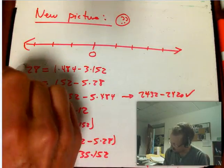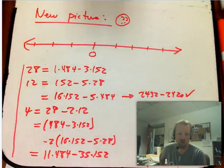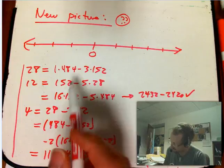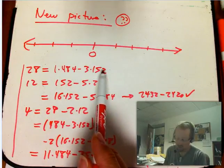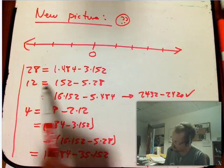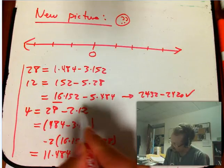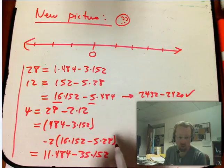But let's just be really specific. I didn't want to bore you with doing it out live, but here's the process that we were getting to. The 28 is a linear combination of A and B, 484 and 152. 12 can be written as a linear combination as well. It turns out to be 16 times 152 minus 5 times 484.